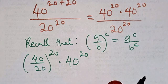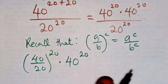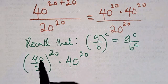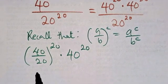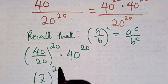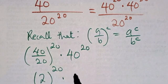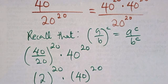So from here, what is the next thing we are going to do? 40 divided by 20 will actually give us 2. So we have 2 to power 20 multiplied by 40 to power 20.